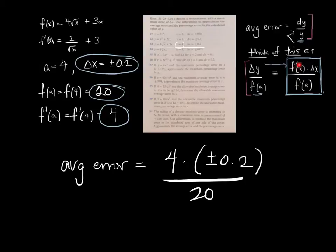Where do these ingredients come from? f prime of a is 4. That goes here. Delta x is plus minus 0.2. That goes here. Delta x plus minus 0.2 is here. f of a is 20. That goes in the denominator. All right. Put it all together.